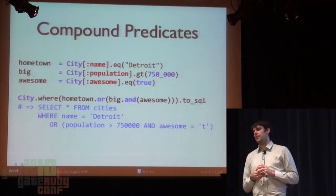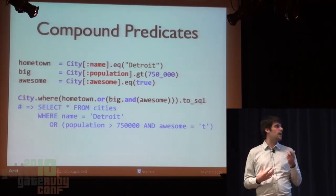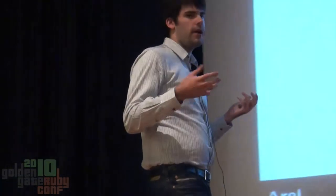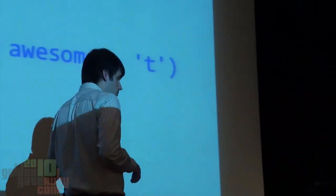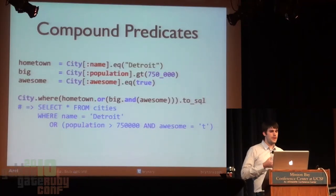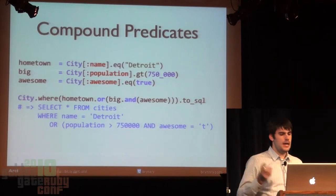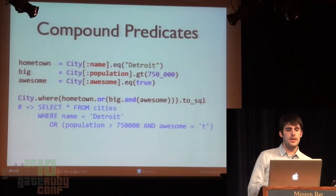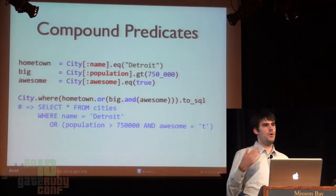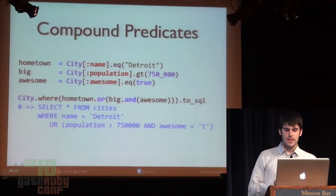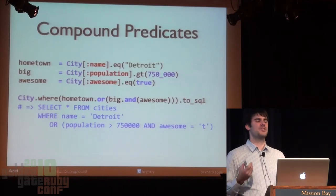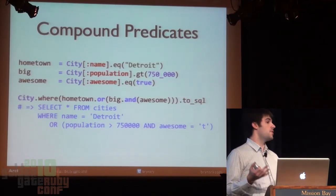That lets you do a lot of really interesting things. I'm going to walk through building up a compound query with both OR and AND — something you can't do with a hash. You can do it without dropping to SQL in Rails 3 today using the AREL API directly. First I create a predicate where the city name is Detroit — my hometown, but decidedly not awesome. Then predicates for big cities and awesome cities. The query finds cities I might consider living in: Detroit, or cities where the population is greater than 750,000 AND they're awesome. When you run that, it does what you expect and you get back a result.